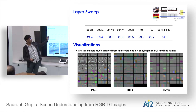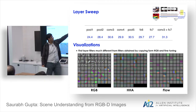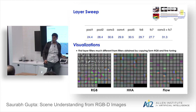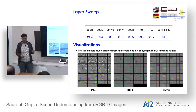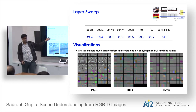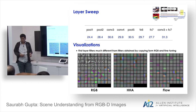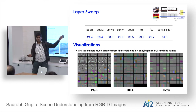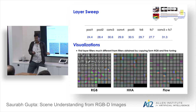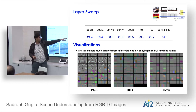How does performance vary with the transfer point (which layer to supervise)? At early layers like Pool 1 and Pool 2, the RGB network has texture-sensitive filters that can't be reproduced in depth, so transfer doesn't work well. Performance improves as you go higher until mid-level layers — the sweet spot. At fully-connected layers FC6 and FC7, the representation loses spatial correspondence, so performance drops again.